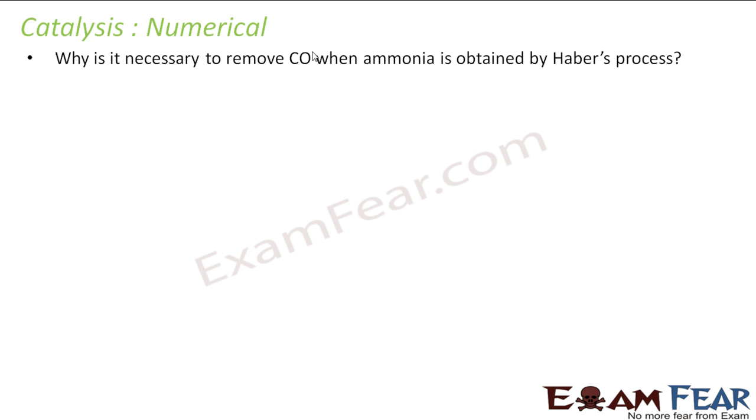Let's take some numerical problems. The first one is: why is it necessary to remove carbon monoxide when ammonia is obtained by Haber's process? In the Haber process, we take methane and steam in the presence of nickel catalyst.